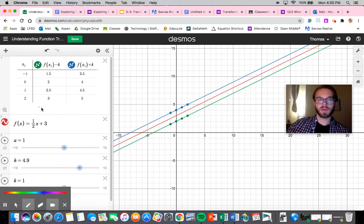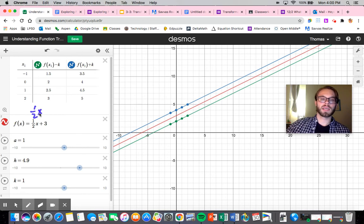So essentially what we're dealing with here is, if I were to plug this in, it's one half x plus 3, and then I'm just subtracting k from that. So essentially I'm taking my y-intercept, I'm subtracting a number from it. So it's going lower. Unless I was subtracting a negative number, then I'm going higher, but that's a different story.